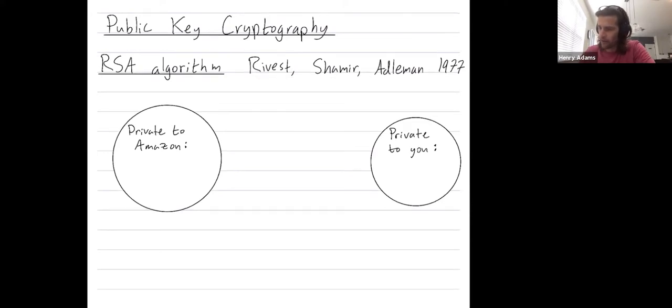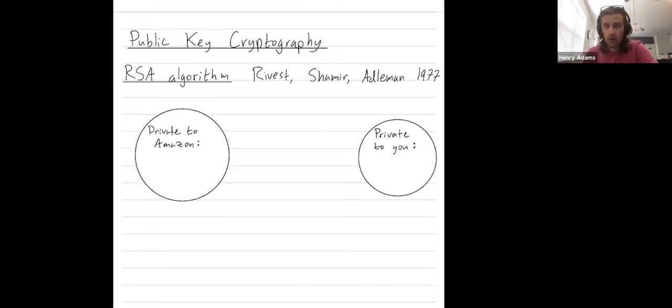So Amazon wants to make a way so that they can broadcast a public key, so that anybody can use that public key to send them an encrypted message, but nobody who doesn't have their private keys can decrypt those messages.